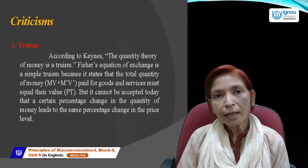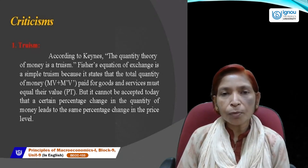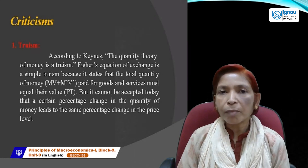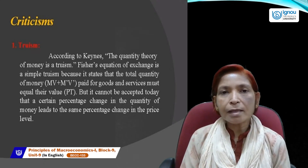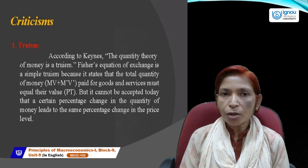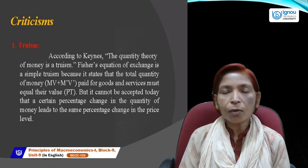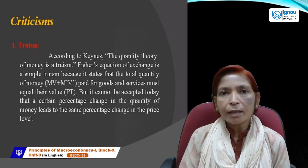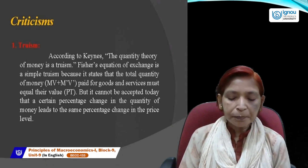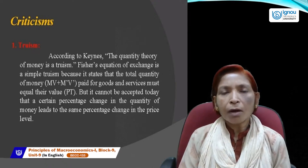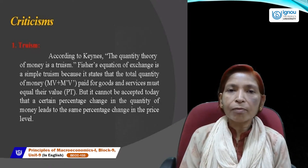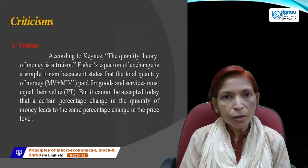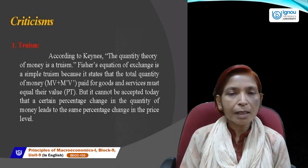What Keynes explained is why the cash balance approach is considered superior to Fisher's quantity theory of money. Fisher assumed a long time period and that full employment always exists — which is not realistic. Keynes' theory is applicable in the short run; as Keynes said, in the long run we will all be dead, so problems occur only in the short run. These assumptions, equation, and criticism of QTM are the most important aspects to understand.